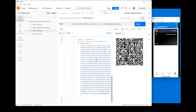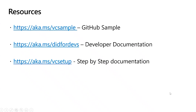That was a quick demonstration of the whole flow using Postman. Details are available on our public website with respect to the issuance API specification and presentation API specification. Short links for resources: you can look at the sample at aka.ms/vc-sample, we have developer documentation, and step-by-step documentation at aka.ms/vc-setup. We hope this was useful — thank you for watching and we hope to see you in the next video.